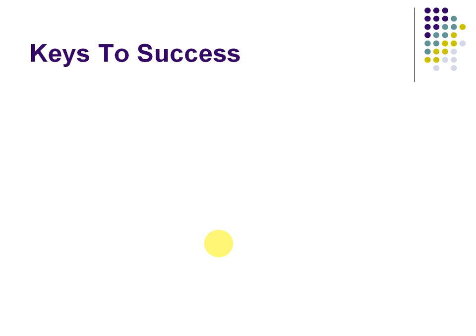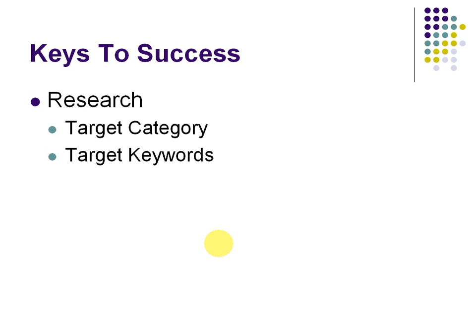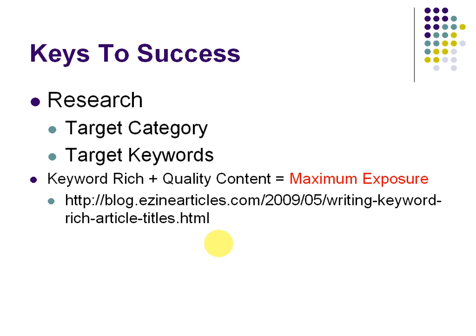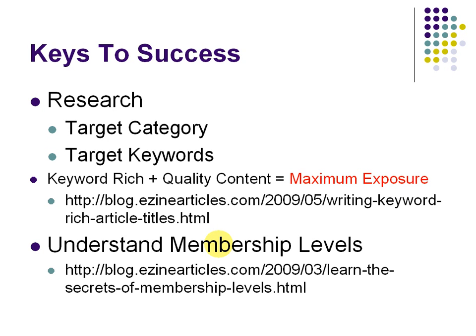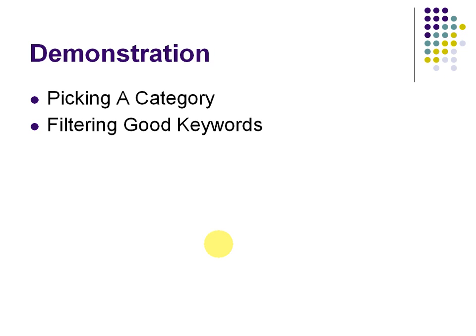Now, what are some of the keys to success? Is it really realistic that you can become a top 10 author in a week? To do that, you need to do research on your target category and your target keywords. You need to have a keyword-rich article and it has to be quality content in order for publishers to want to pick up your content and redistribute it. There is a great post on the EzineArticles blog on writing keyword-rich article titles, which will definitely help you draw in readers. It's also important when you get started on EzineArticles that you understand the membership levels — basic, basic plus, and platinum level author status.